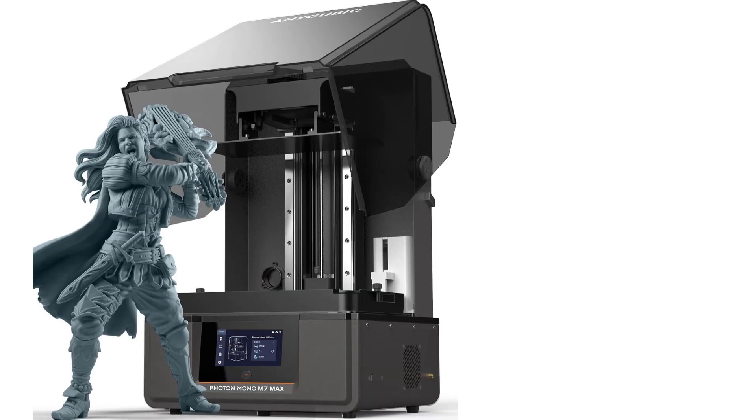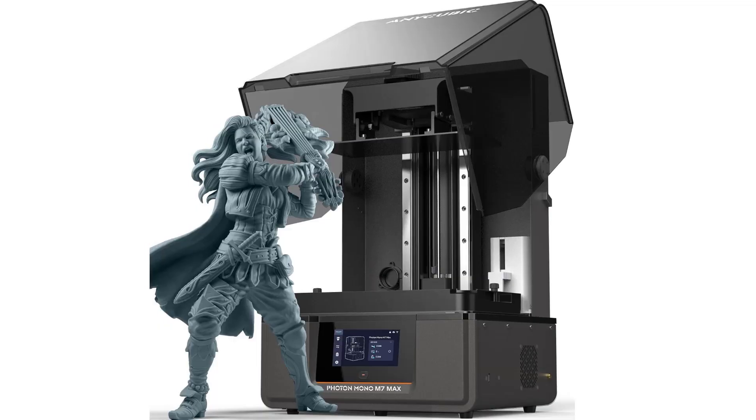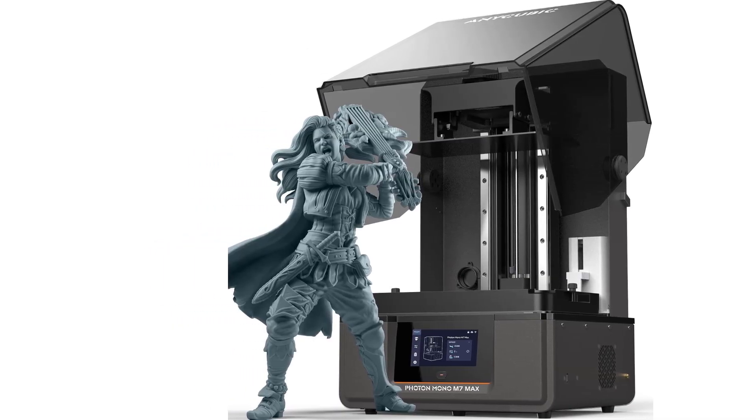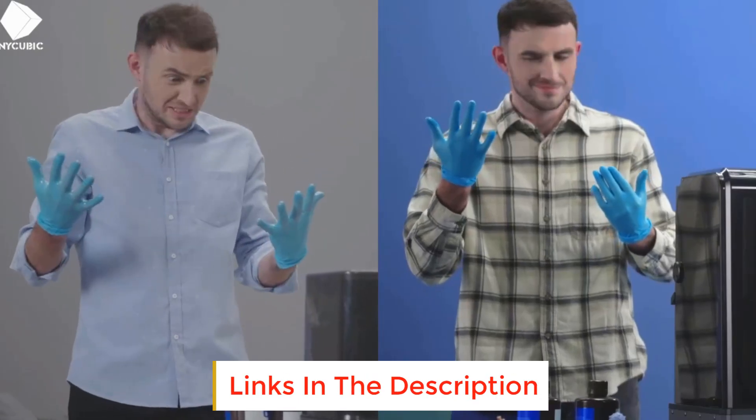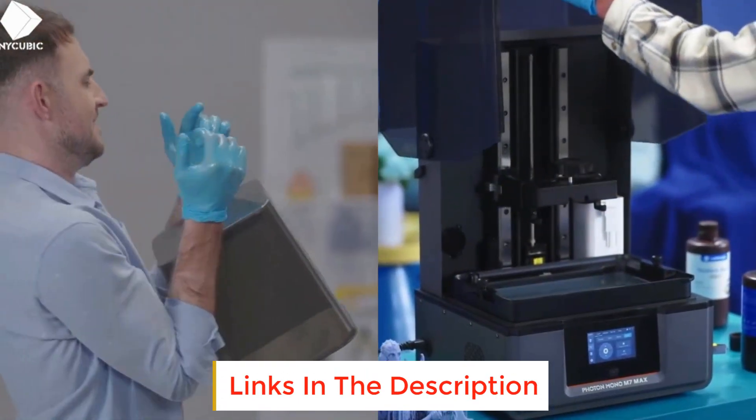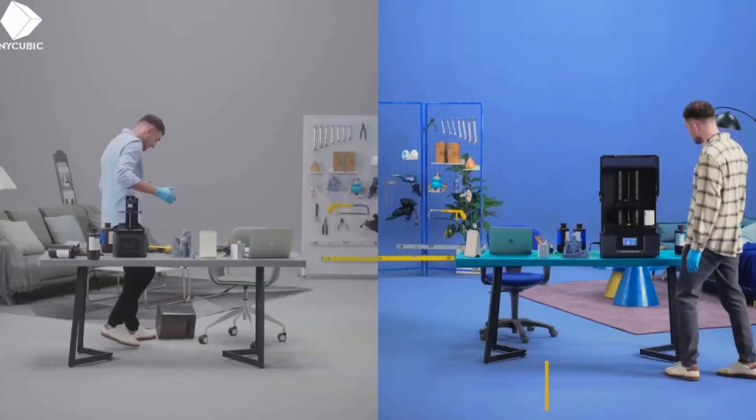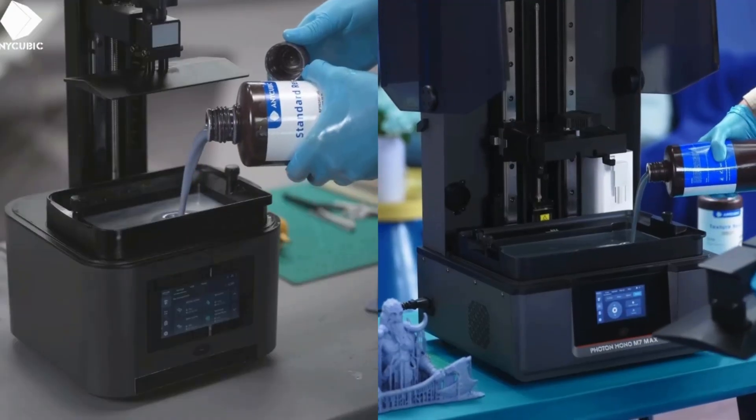The Photon gained popularity for its affordability and print quality, significantly contributing to the accessibility of resin 3D printing. Today, Anycubic's SLA resin printers range from the entry-level Mono 4 series to the flagship M7 series, capping off at the M7 Max.